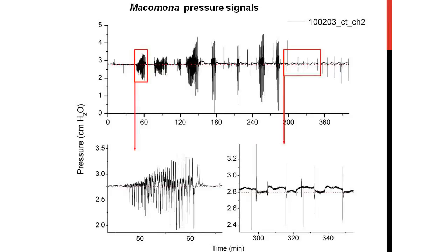Here's another tellinid — a Macoma species from New Zealand. This is the compressed record, and then we've expanded these sections. Here the animal is burrowing — this is what burrowing looks like. Looks very different from feeding. This is feeding in the compressed form, and here in the expanded form. You see again these little rectangular periods, with the red line as baseline. That's what pressure sensors do for you.